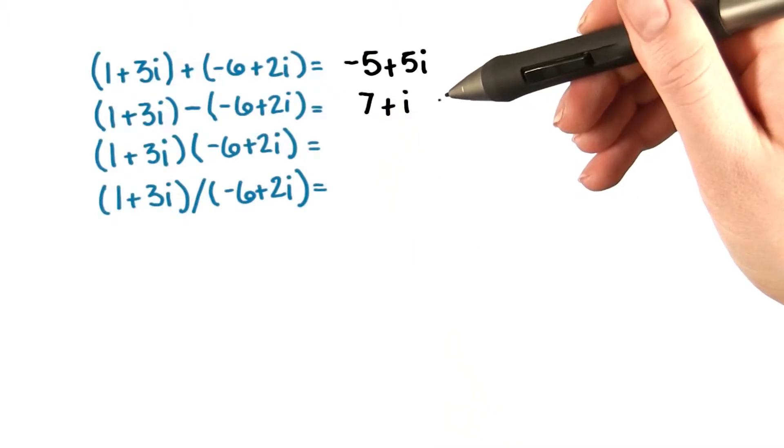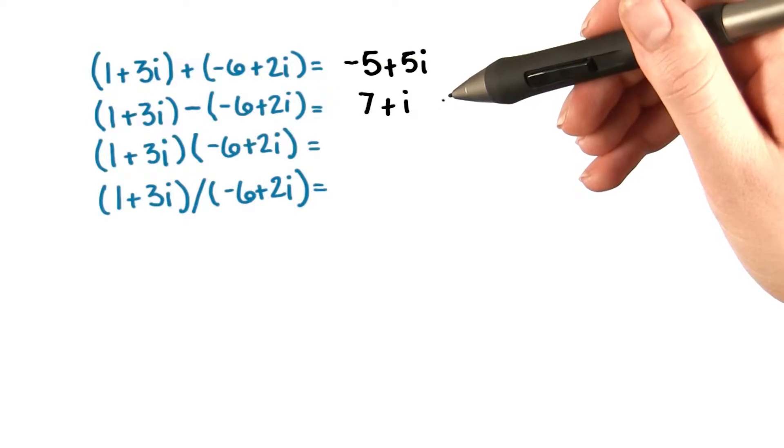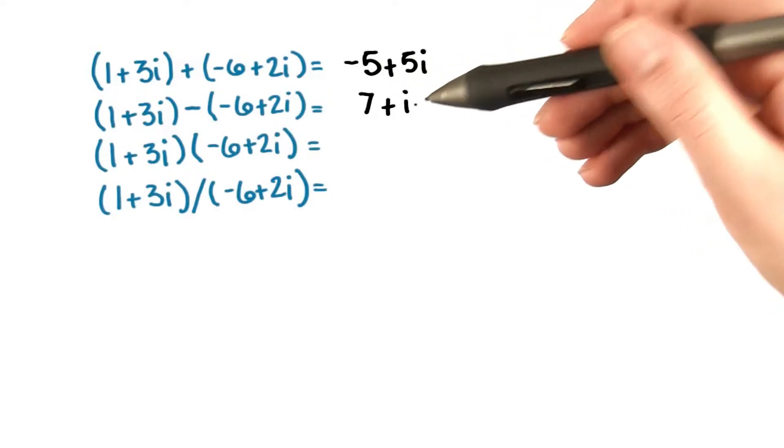1 plus 3i minus the quantity negative 6 plus 2i gives us 7 plus i.